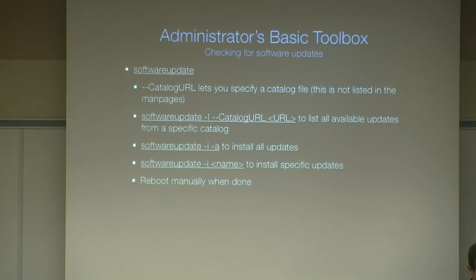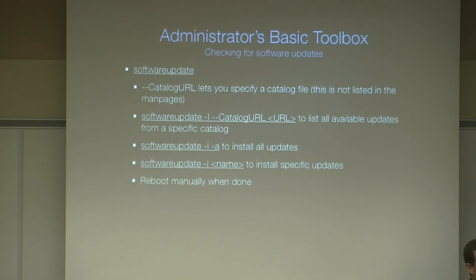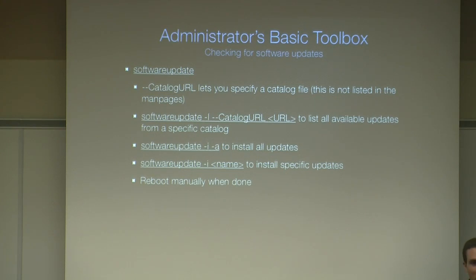The softwareupdate command is very basic but very helpful. It does exactly what it sounds like — a manual check for software update. You can specify a catalog URL to test your Apple software update catalogs or Reposado installation. Use -l for listing updates, -i for installing them, and -ia for getting everything. Note that unlike the GUI application, this does not automatically prompt you to restart — it tells you that you should restart but does not make you.